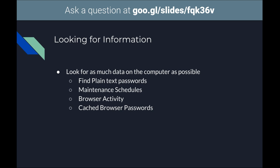Another thing is browser activity. Metasploit has a lot of good modules where you can just dump browser data and look through it. Chrome, Firefox, and Edge — though Edge has done a lot of things to secure it, it can still leak information. Cached browser passwords are very useful because people tend to use the same password. So if you can get a cached browser password from Chrome or any other web browser, that's great information you can use.